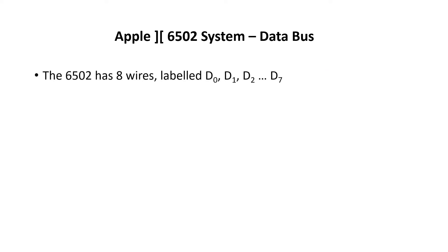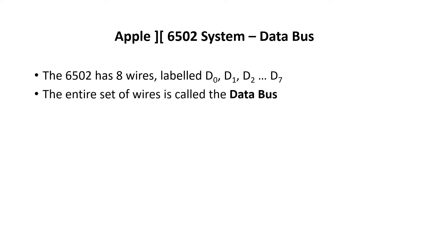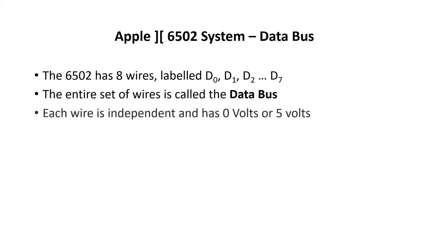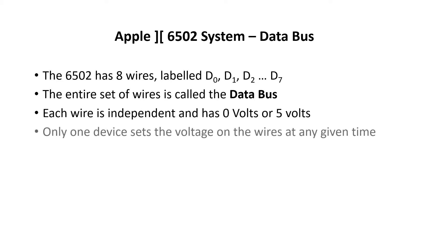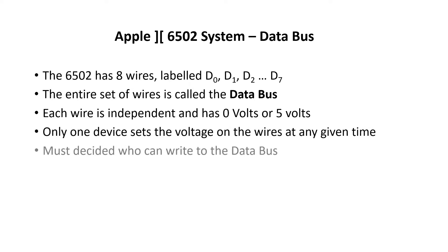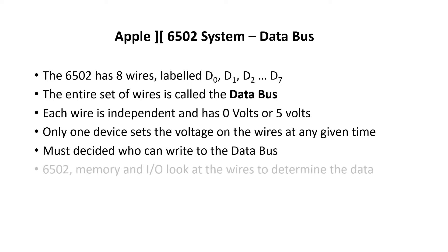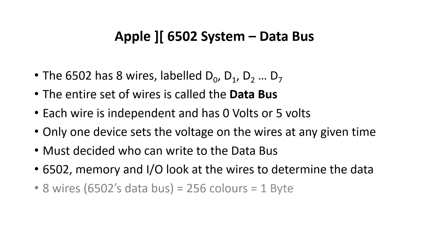The 6502 data bus has 8 wires, labelled D0 through D7, and the entire set of wires is called the data bus. Each wire is independent and carries either 0 or 5 volts. Only one device on the bus gets to set the voltage on the wires at any point in time, which means we need a way of deciding who can write to the bus. 8 wires means we can have up to 256 different values, and this is referred to as a byte, spelt B-Y-T-E.